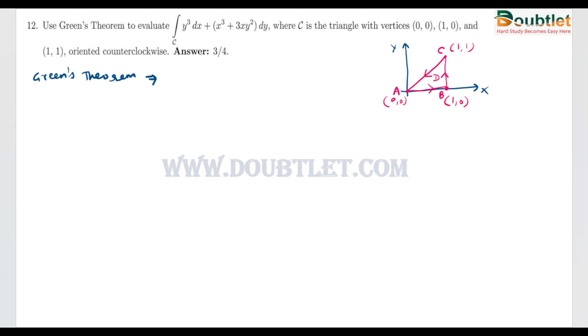What it states is that M dx plus N dy along a curve is equal to ∂N/∂x minus ∂M/∂y, and we have to find the double integral along the shaded region D.